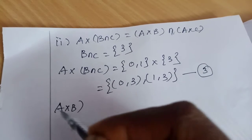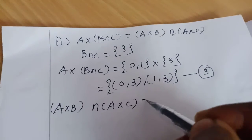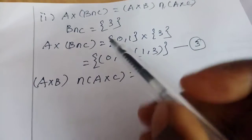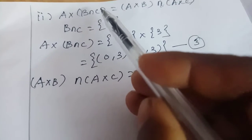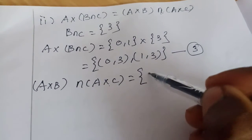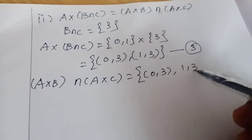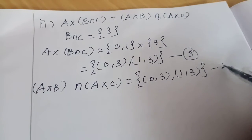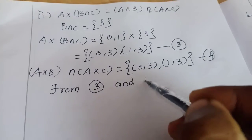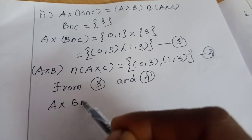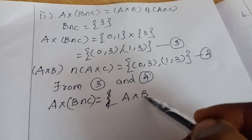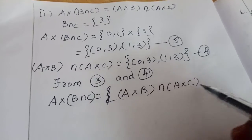Next, find (A×B) ∩ (A×C) — the common elements between A×B and A×C. The common elements are (0,3) and (1,3). This is equation number 4. From equations 3 and 4, A×(B∩C) = (A×B)∩(A×C) is verified.